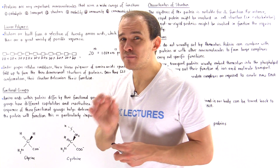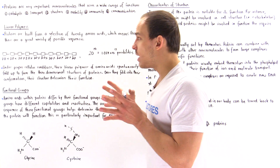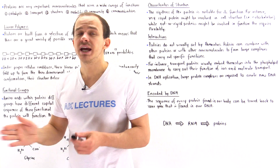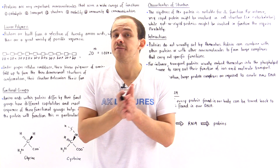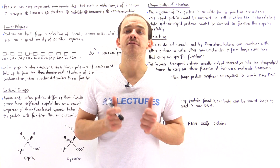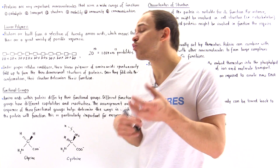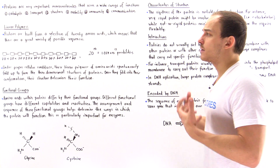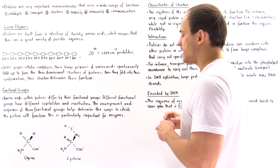So 10 trillion possibilities exist for a protein that consists of only 10 amino acids. And usually proteins consist of hundreds and sometimes thousands of amino acids, meaning there is a great number of different possible sequences inside the proteins found in our body.